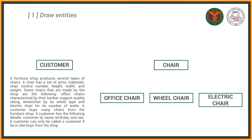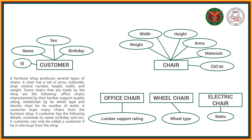Now let's put the attributes. A chair has: arms, materials, chair control number — which sounds like a primary key — height, width, and weight. For the specific types of chairs: office chairs are characterized by lumbar support quality rating, wheelchair by wheel type, and electric chair by number of watts. The customer has: customer ID — primary key — name, birthday, and sex.